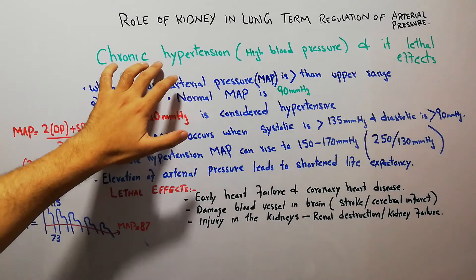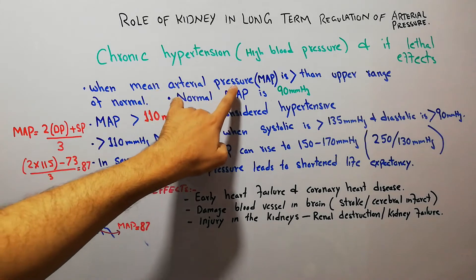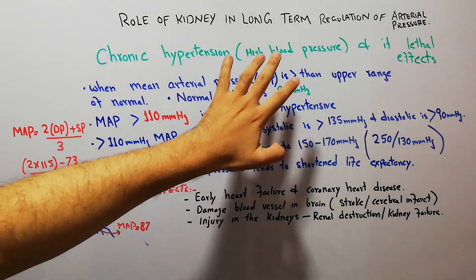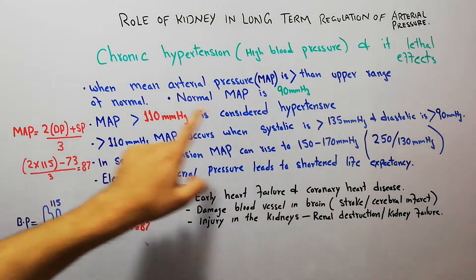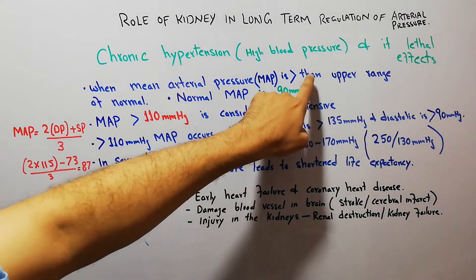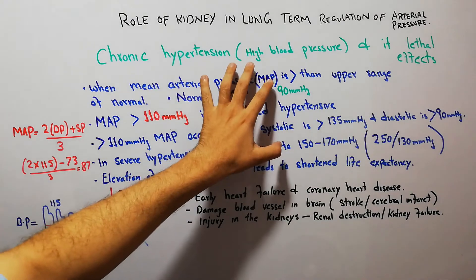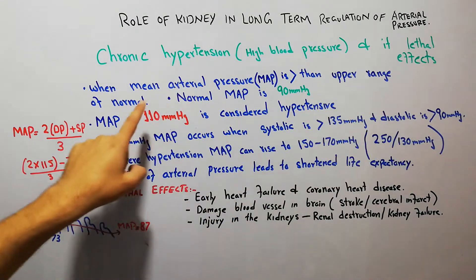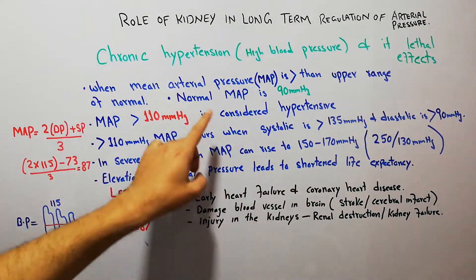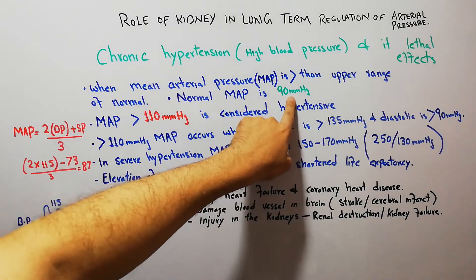To understand chronic hypertension or high blood pressure, we must first understand mean arterial pressure, or MAP. Chronic hypertension occurs when the MAP is more than the upper range of normal, which is 90 millimeters of mercury.